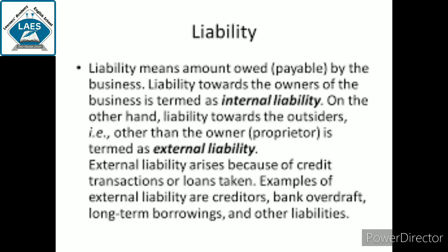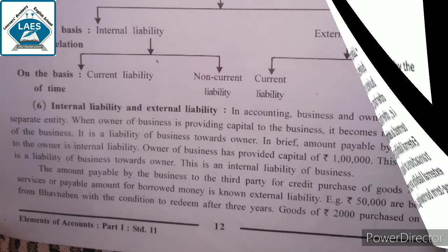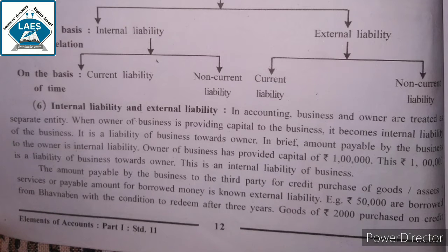Internal liability and external liability. In accounting, business and owner are treated as separate entity. When the owner of business is providing capital to the business, it becomes internal liability of the business. It is a liability of business to our owners. In brief, amount payable by the business to the owner is internal liability. Owner of the business has provided capital of rupees 1 lakh. This 1 lakh is a liability of business to our owner. This is an internal liability of business.